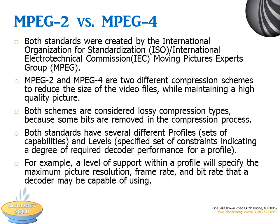MPEG-2 and 4 are two different compression schemes to reduce the size of video files while still maintaining a high-quality picture. They are lossy compression types, which means some bits are removed during compression. MPEG is designed to support a wide range of applications and services of varying bit rate, resolution, and quality. Both standards have several different profiles and levels to ensure interoperability with the receiver. Profiles are determined for various applications and provide a baseline set of capabilities. Levels are constraints indicating decoder performance for a specific profile.